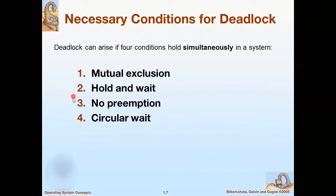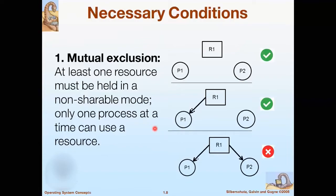Now, necessary conditions for deadlock. There are four conditions in order for a deadlock to occur, or we can say deadlock can arise if four conditions hold simultaneously in a system. These four conditions are: mutual exclusion, hold and wait, no preemption, and circular wait. The first one is mutual exclusion — at least one resource must be held in a non-shareable mode, meaning only one process at a time can use a resource.